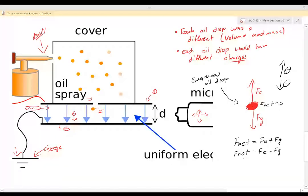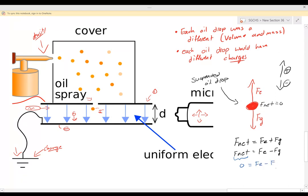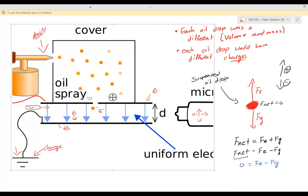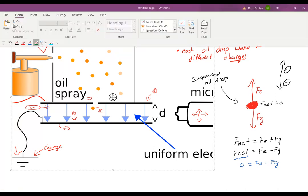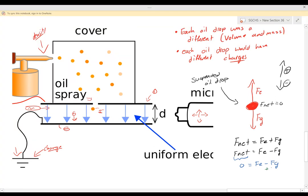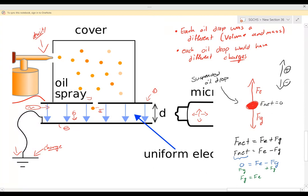Now remember, my net force is zero. So there's zero net force Newtons acting on this. That means if we move our force of gravity to the other side, we can see that we will get our force of gravity equaling our electric force. And remember, this is only true for those few oil drops that would be suspended in air.